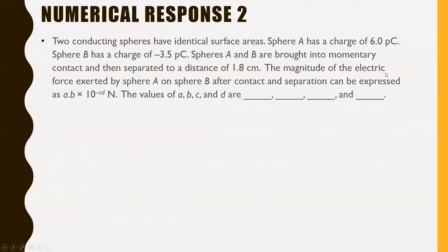The first question we're going to go over is numerical response two. Two conducting spheres have identical surface areas — you can read the full question. The bottom line is we're looking for the electric force. Since it's an electric force between two different charged objects, we're going to use the formula: Fe equals K Q1 Q2 over R squared.